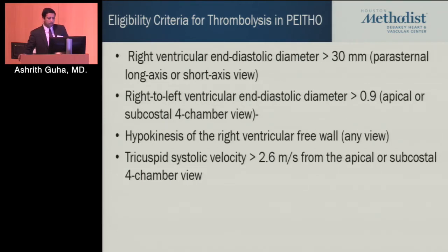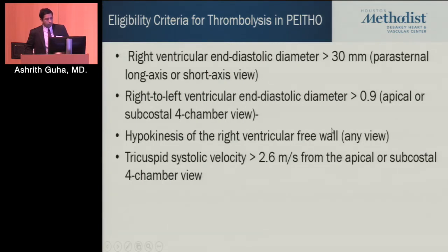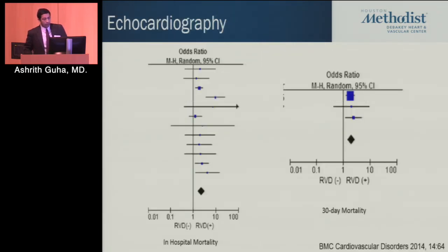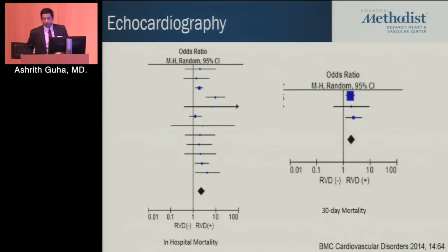The largest trial of thrombolytics in intermediate-risk patients was the PEITHO trial. They used right ventricular end-diastolic diameter of 30 millimeters, RV to LV end-diastolic diameter greater than 0.9, hypokinesis of the right ventricular free wall, and tricuspid systolic velocity greater than 2.6 meters per second. In a meta-analysis of about 12 studies in normotensive patients, both in-hospital and 30-day mortality were higher in patients with any RV dysfunction.